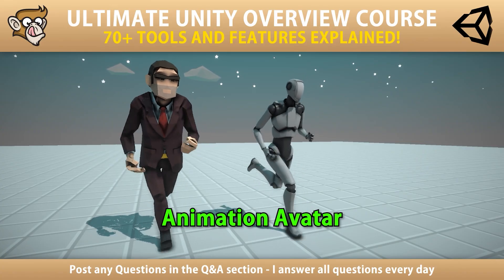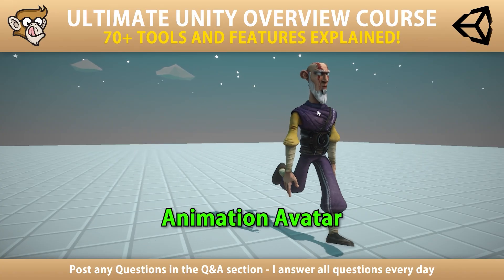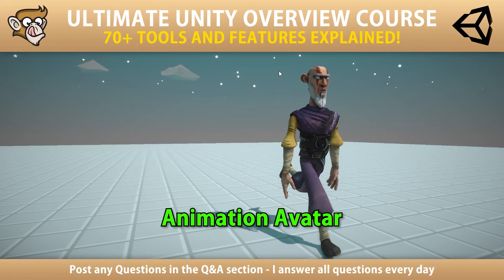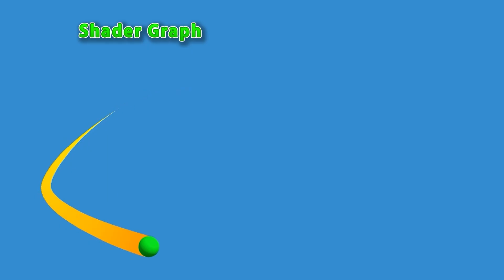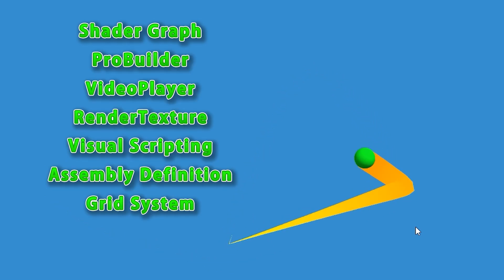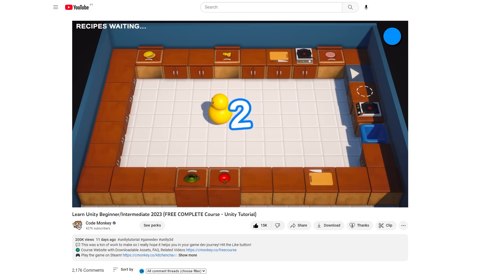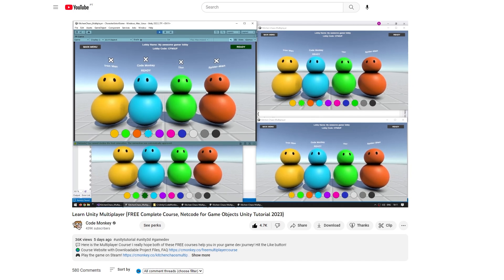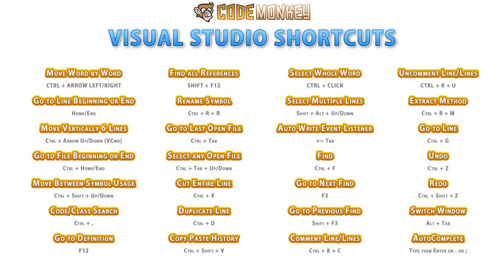And if you want to learn specifically about Unity, check out my Ultimate Unity Overview course, covering 70 tools and features the engine has. Or for a guided path, check out my two free courses: making a game step-by-step and then making it multiplayer. Okay, so let's learn about a ton of super useful shortcuts to help you massively increase your productivity.